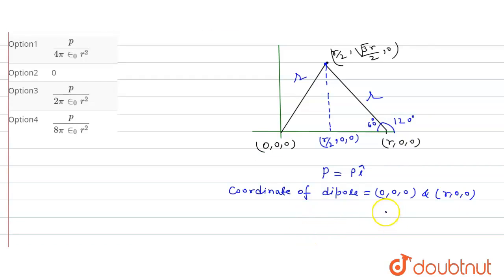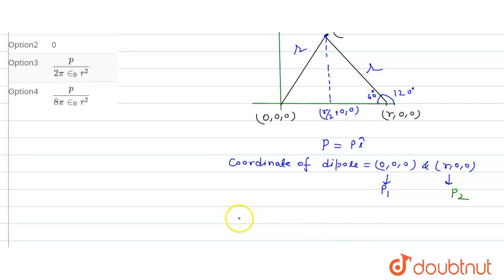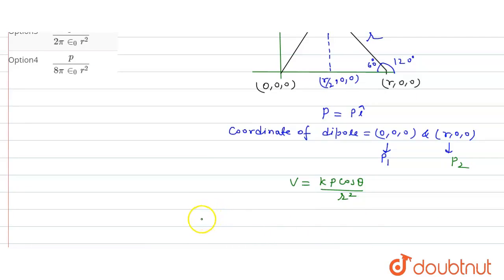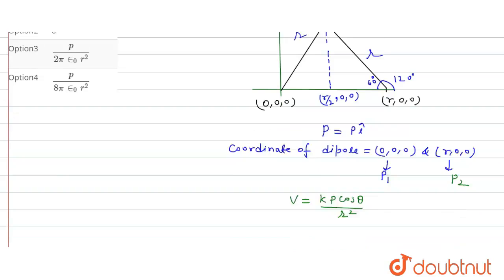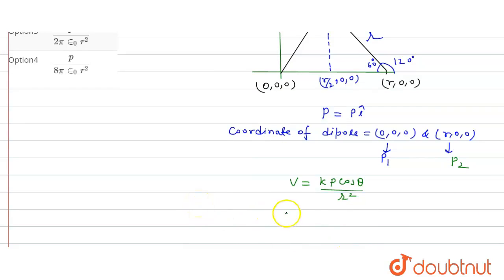The dipole moment given is p = p î. The coordinates of the two dipoles are (0,0,0) and (r,0,0). We consider the dipole at the origin to be p1, and the dipole at (r,0,0) to be p2. The electric potential due to a dipole is V = k·p·cosθ / r².